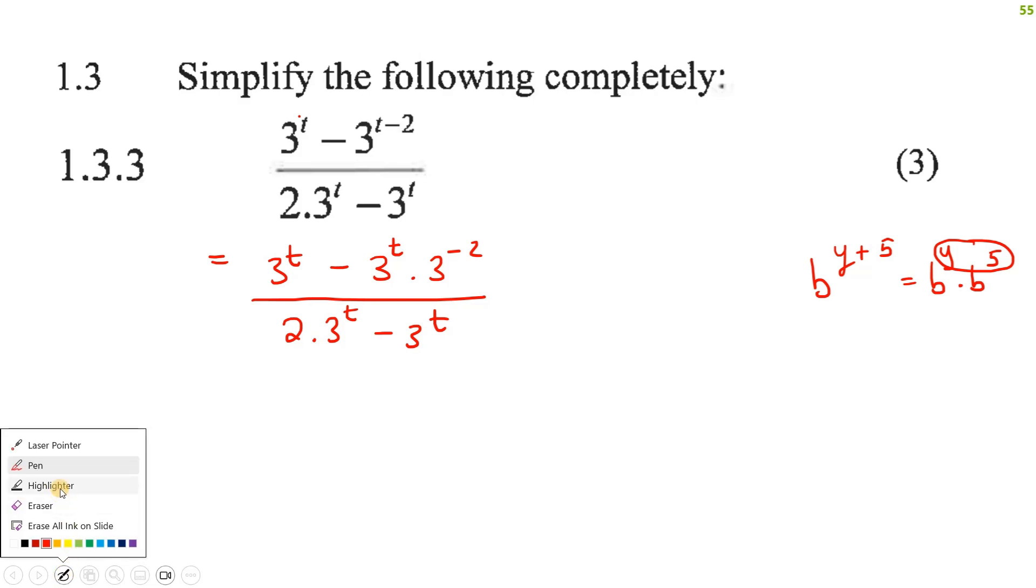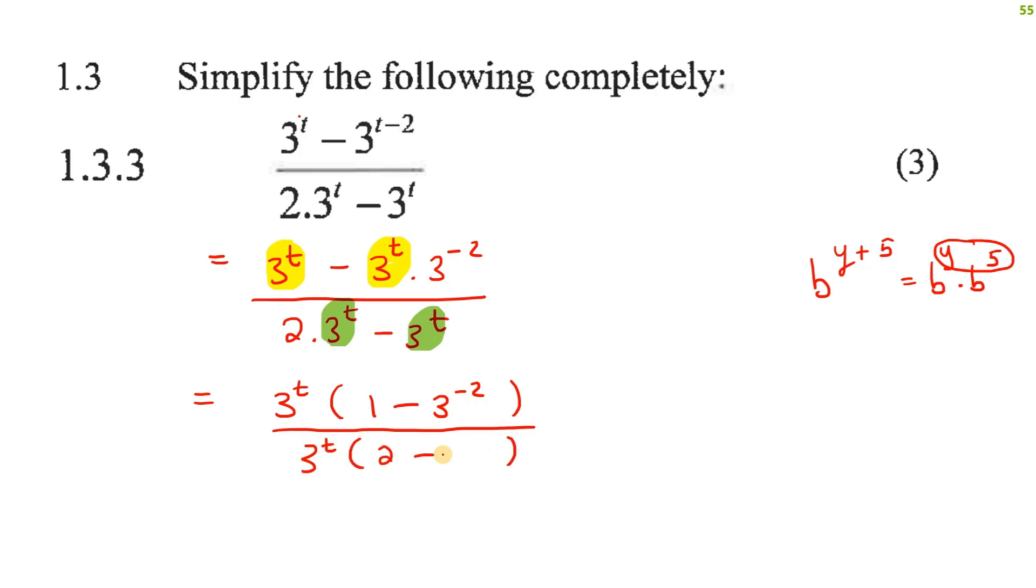What we do now is you can take out a common factor at the top, and then there's another common factor at the bottom. And so you take out a 3 to the t at the top, and you'll now be left with 1 minus 3 to the negative 2. And at the bottom, you can take out a 3 to the t, and you'll be left with 2 minus 1. These 3 to the t's can now cancel. You can then type everything in, and you should get an answer of 8 over 9 as your final answer.